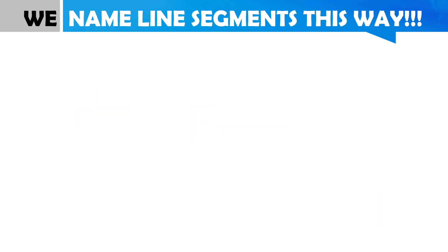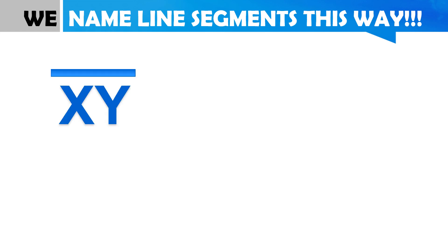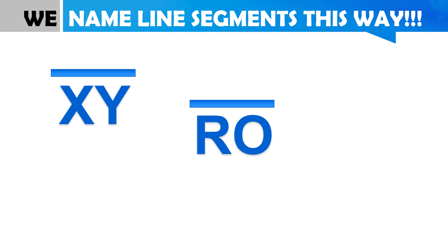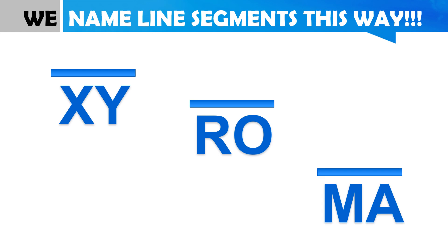We name line segments this way. We use this notation for chords, diameters, and also radius. Examples are line segment XY or line segment YX, line segment RO or line segment OR, line segment MA or line segment AM.